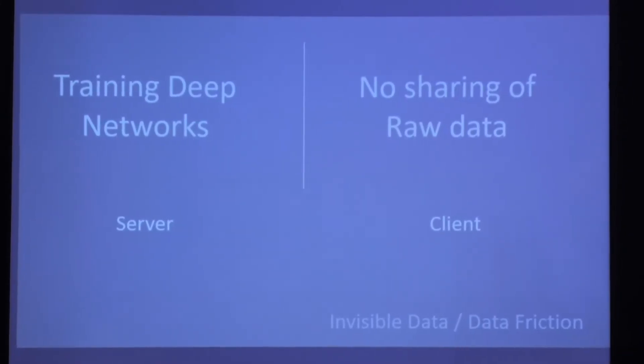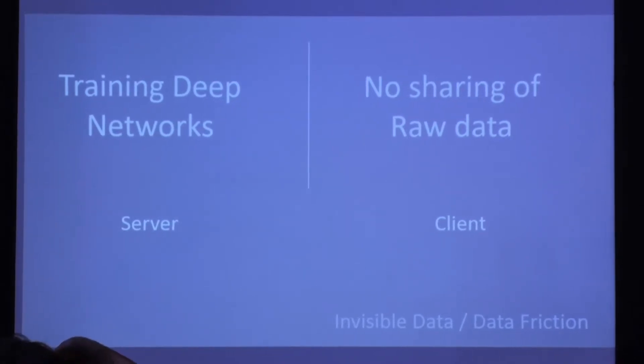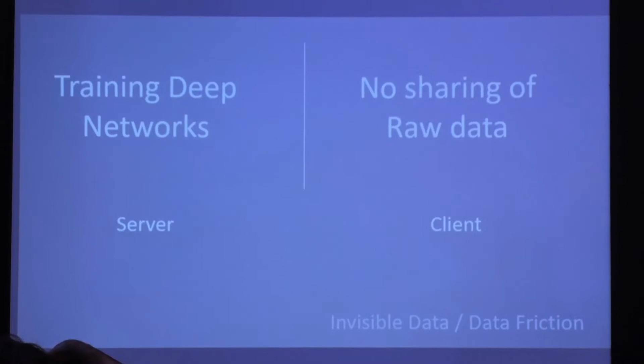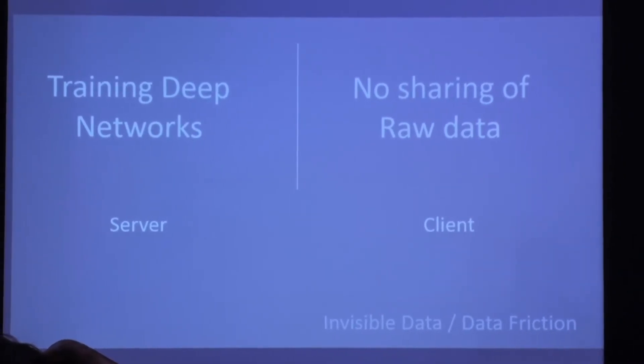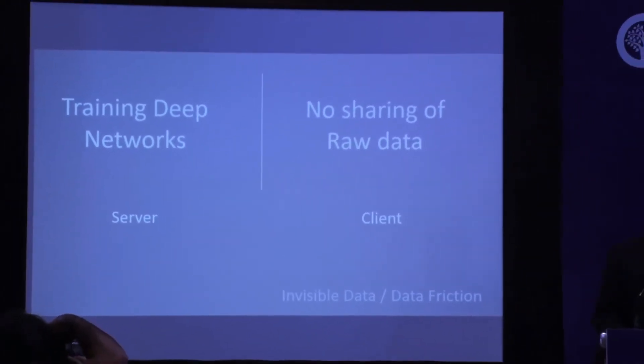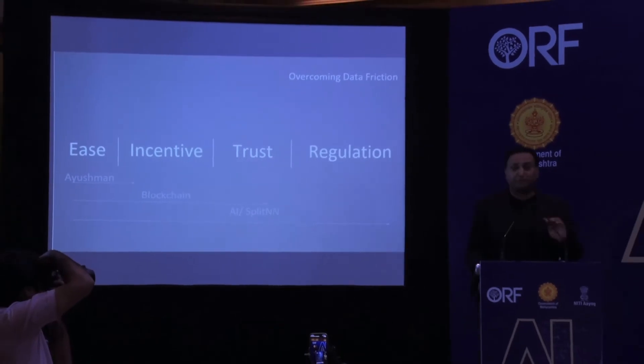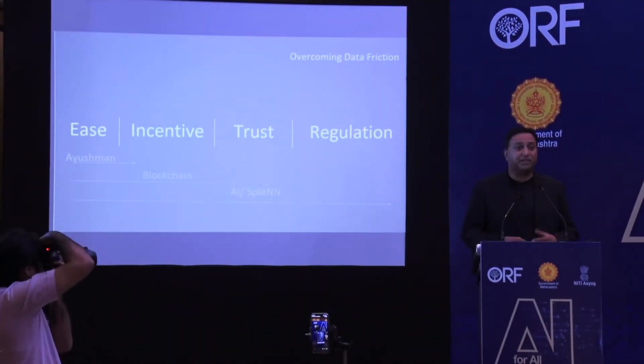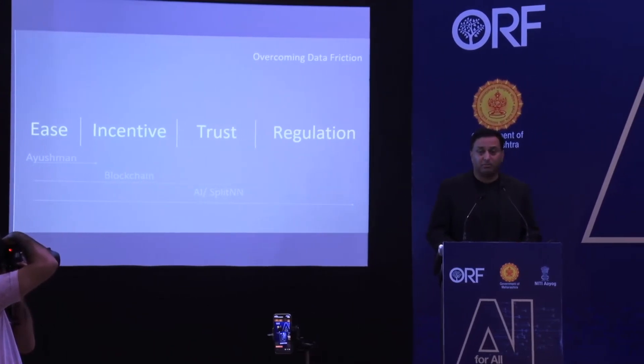There's a server that wants to achieve the global AI, and there are single or multiple clients who have all the data, but the client is not allowed for some reason to share the data. There are basically four reasons for data friction. First, just the ease of sharing data could be a problem, and schemes like Aadhaar hopefully make a lot of that underlying architecture easier. The second is the incentive question — what's the incentive for these small entities to actually do this? They have to spend resources to collect the data, have employees, need compute resources. So they need incentives to do that, and that could be solved with blockchain.